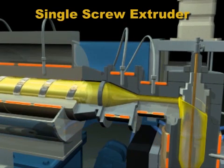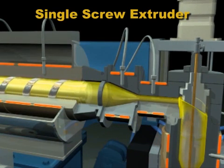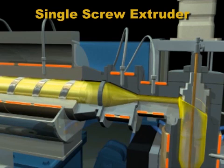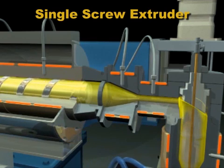The extruder feeds plastic either directly to the die head or to an accumulator. There are two types of accumulators.